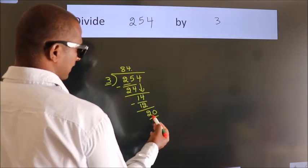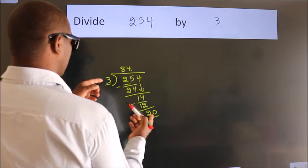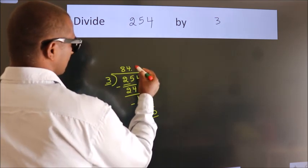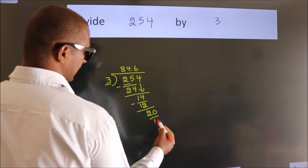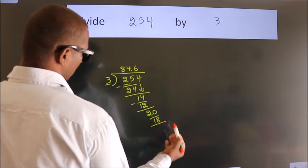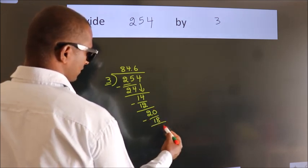So, 20. A number close to 20 in the 3 table is 3 times 6, which is 18. Now, we subtract. We get 2.